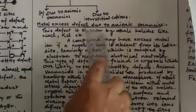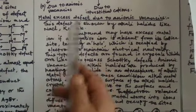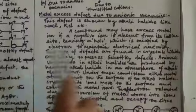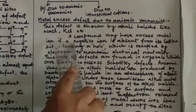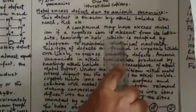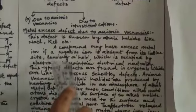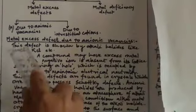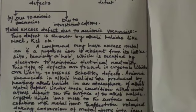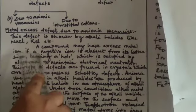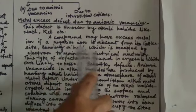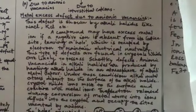This defect is shown by alkali halides like NaCl, KCl, LiCl, CsCl, and so on. A compound may have metal excess if a negative ion is absent from its lattice site, leaving a hole which is occupied by an electron to maintain electrical neutrality. Metal excess is created when an anion moves from its normal lattice site, leaving a hole occupied by an electron. This is called metal excess defect due to anionic vacancy.